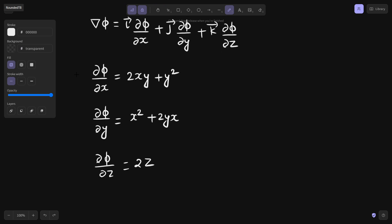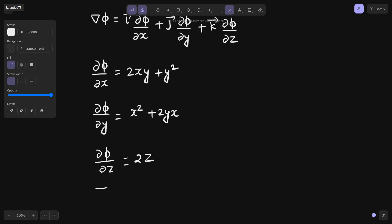Let's plug in these values in the expression of gradient of phi. So gradient of phi is i(2xy + y²) + j(x² + 2xy) + k(2z).